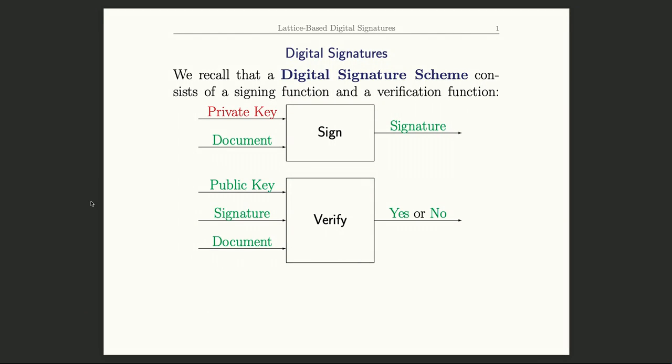Normally it's actually a hash of the document, but I'll ignore that. The output is Alice's signature on that document. Then Bob, when he wants to check that Alice's signature is valid,